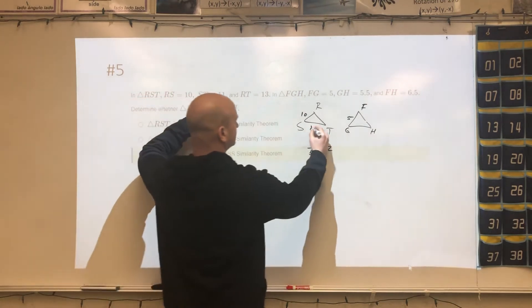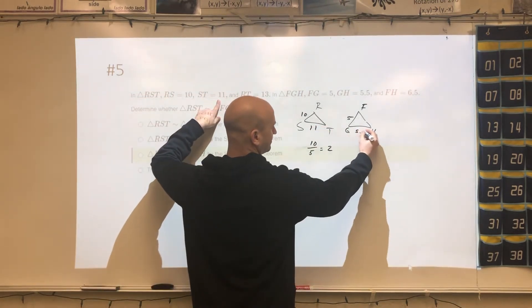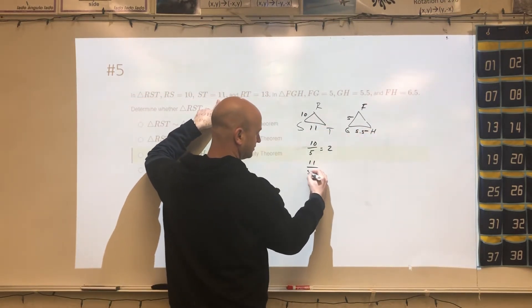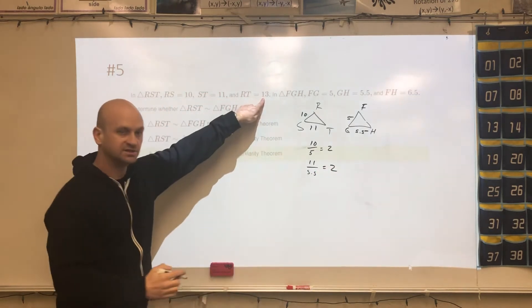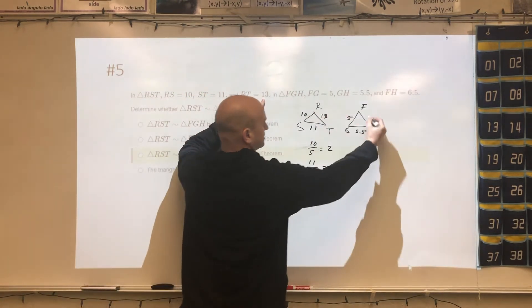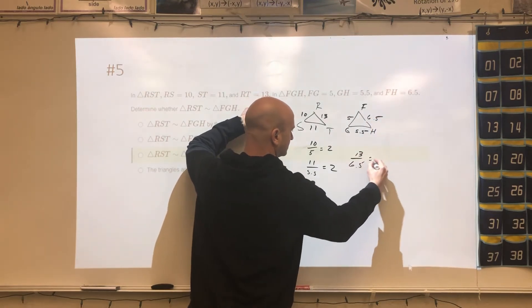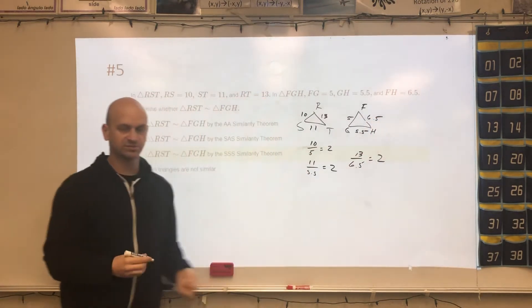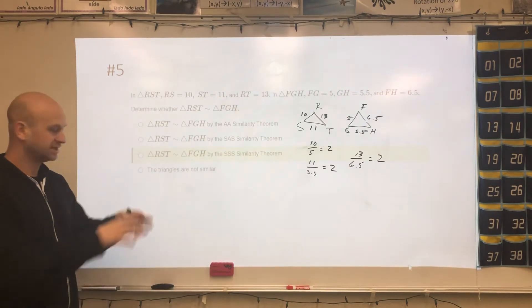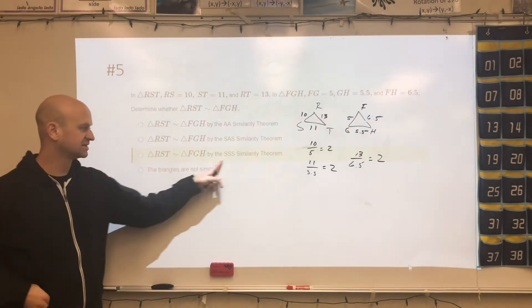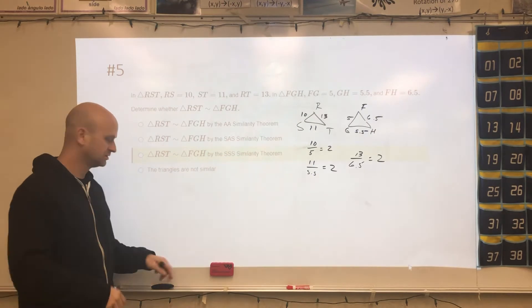ST is 11. GH is 5.5, and when we divide those, we get 2. RT is 13. This is 6.5, and when we divide those, we also get 2. So that proves that the sides are proportional by 3 sides, which is side-side-side similarity theorem.